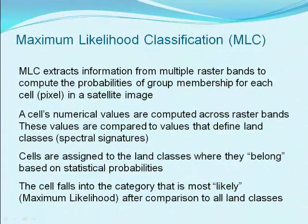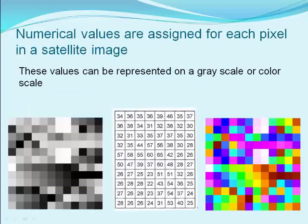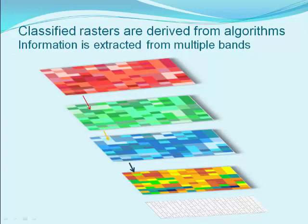MLC extracts information from the composite to compute the probabilities of group membership for each cell or pixel in a satellite image. Cells are assigned to the land classes where they belong based on what seems most likely — hence the name maximum likelihood. Satellite image pixels have numerical values and these digital numbers can be represented on a color scale. Classified rasters are derived from algorithms that analyze numerical values in a satellite image. The resulting map layer is based on how the cell signatures compare to spectral signatures of land cover classes.